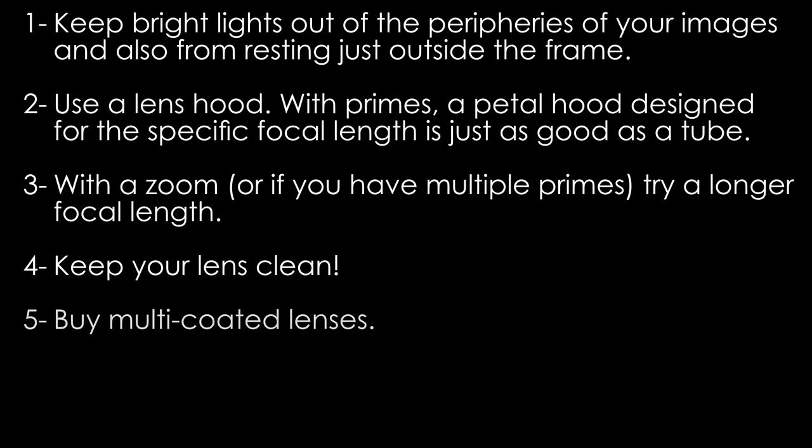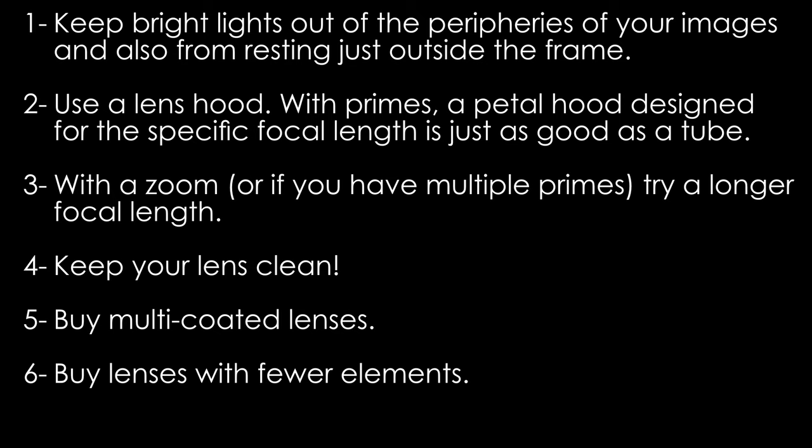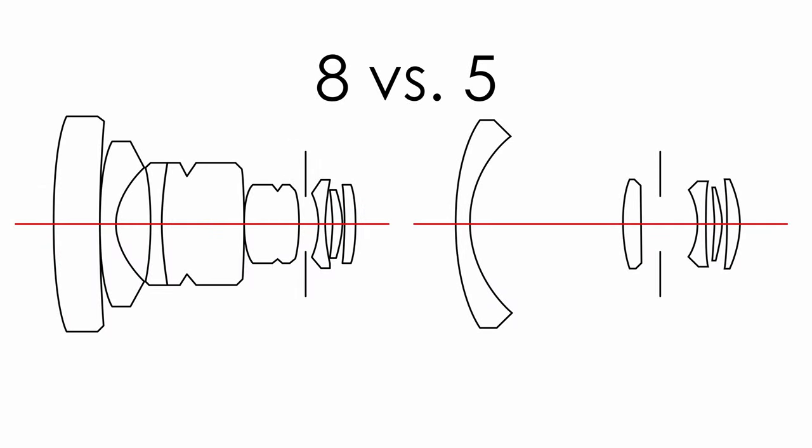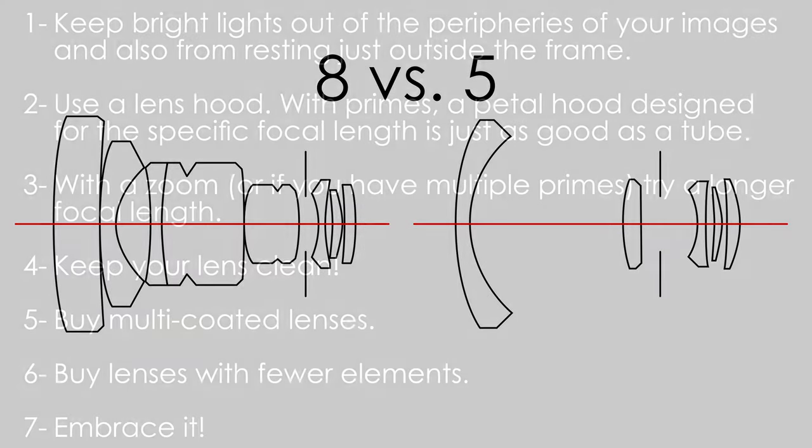Buy multi-coated lenses — all lenses made today are multi-coated, and today's coatings are super advanced. But if you're looking at vintage lenses, uncoated and single-coated lenses do result in more flare than newer lenses. Buy lenses with fewer elements, as fewer elements means fewer surfaces for internal reflections. So if you're looking at a 50mm lens and can choose between one with nine elements and one with six, all other things being equal, the latter likely has slightly better flare and ghosting resistance.